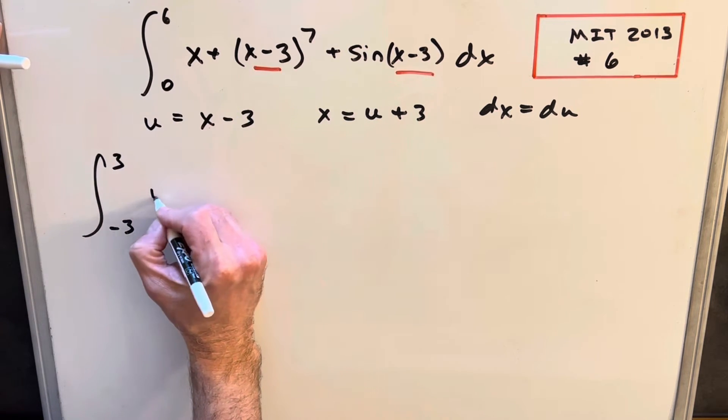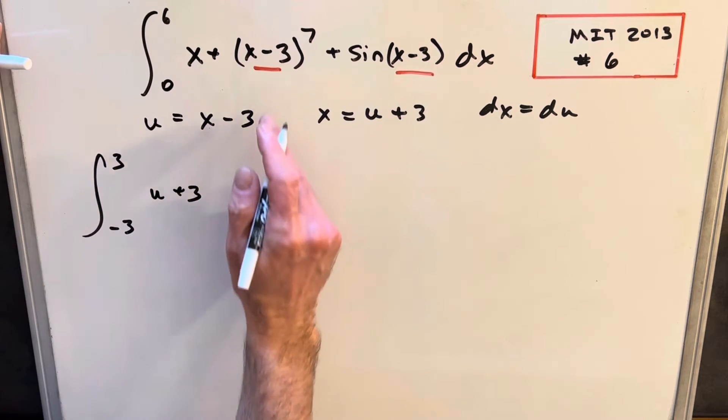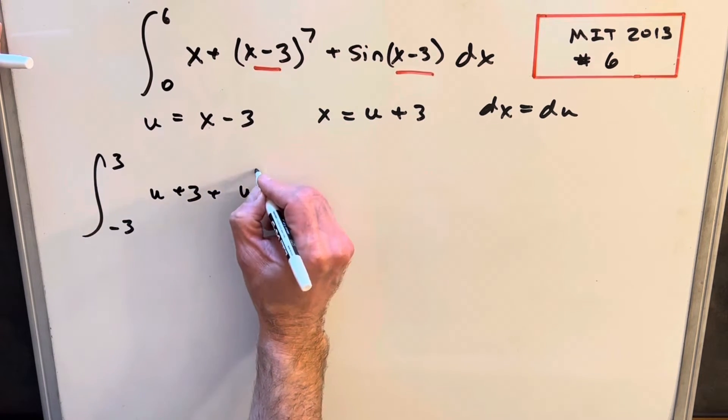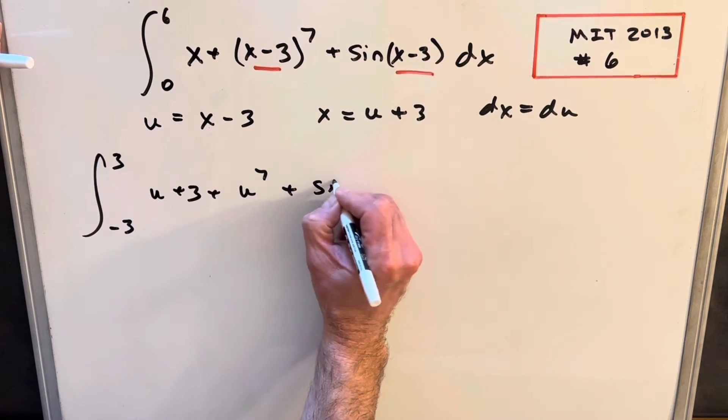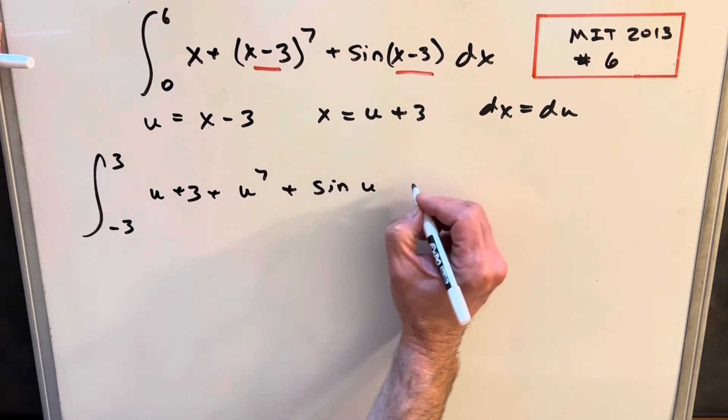Then for x, we'll have our u plus 3. Then for this term, this is just going to be u to the 7th plus sine of u du.